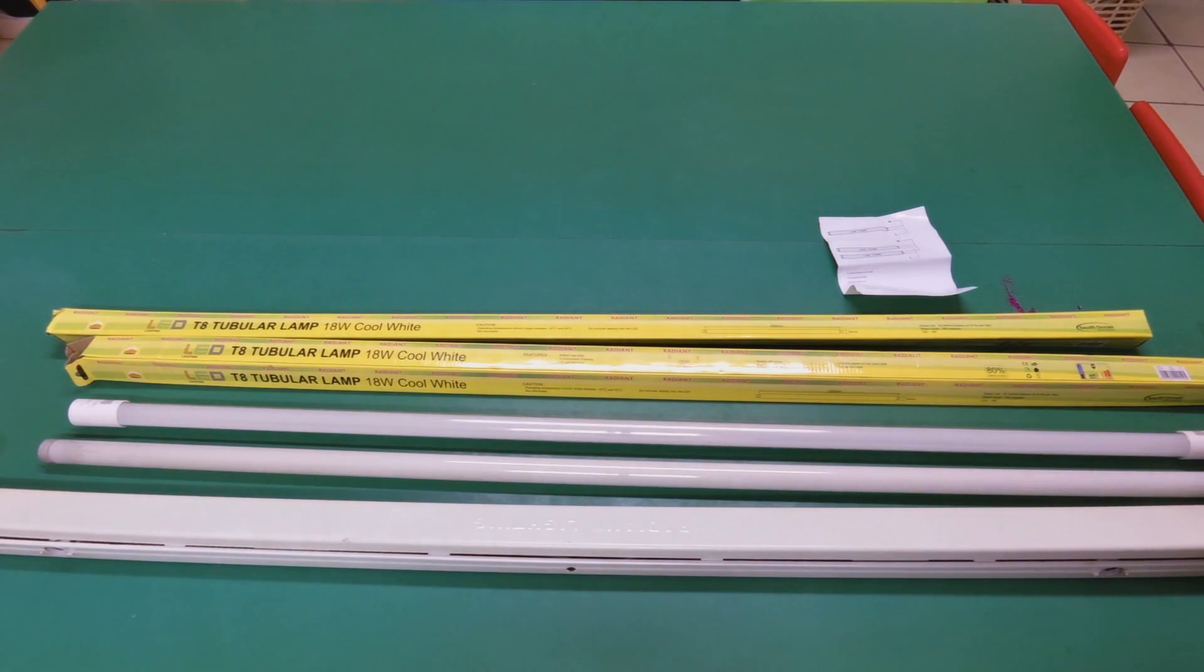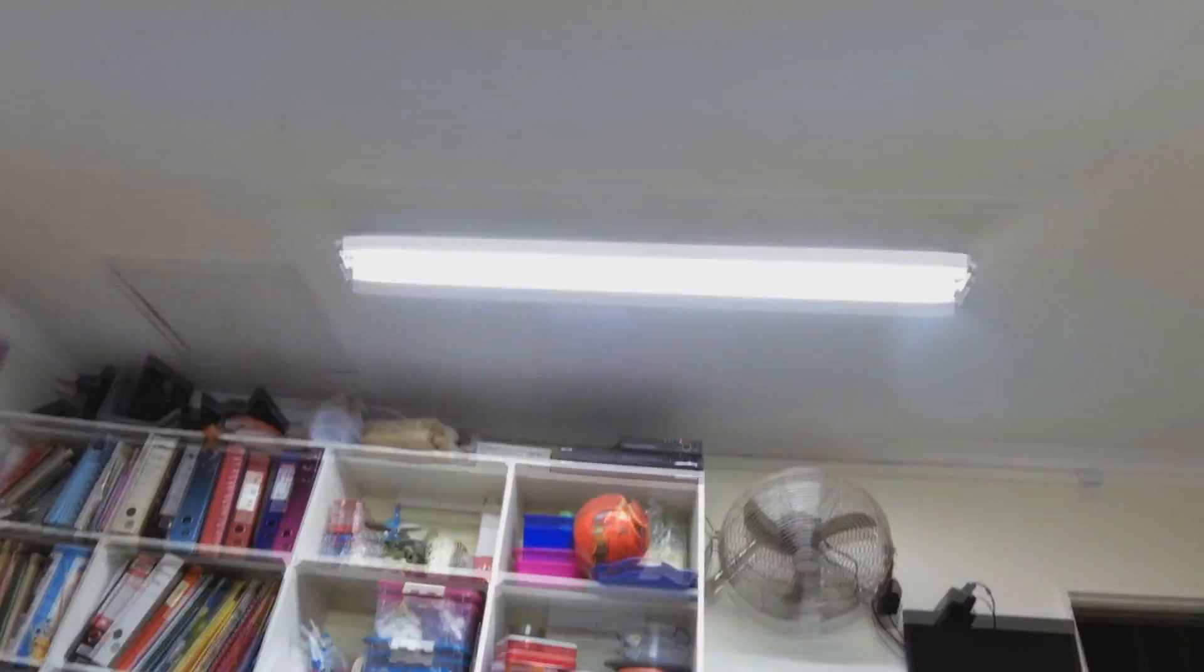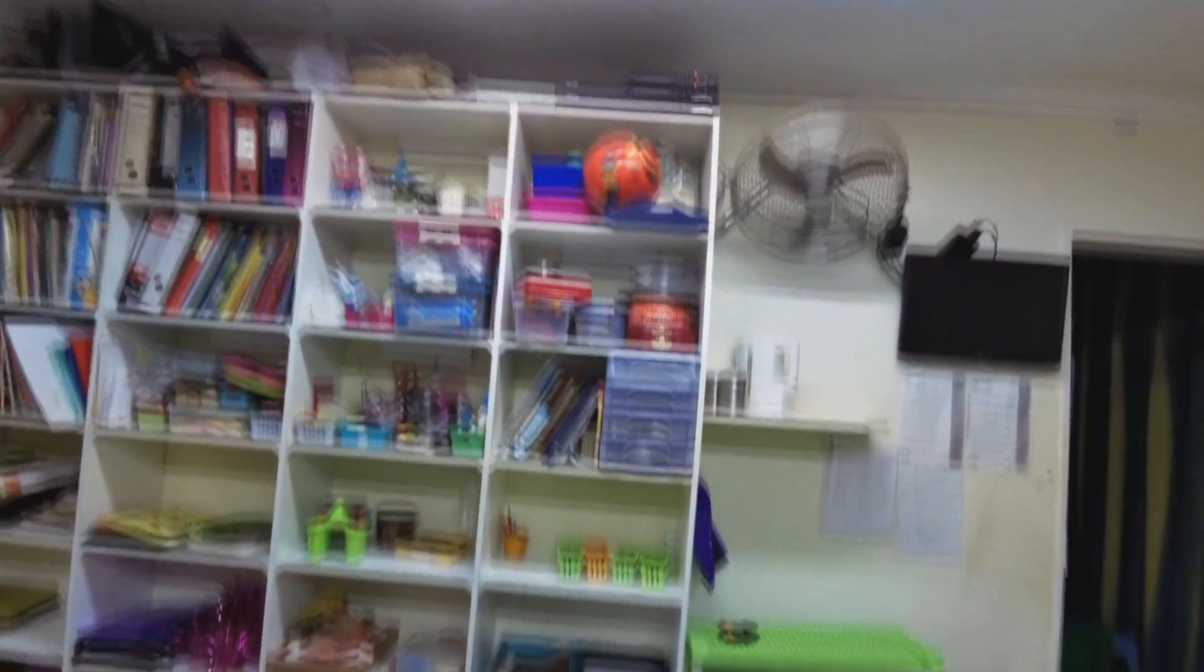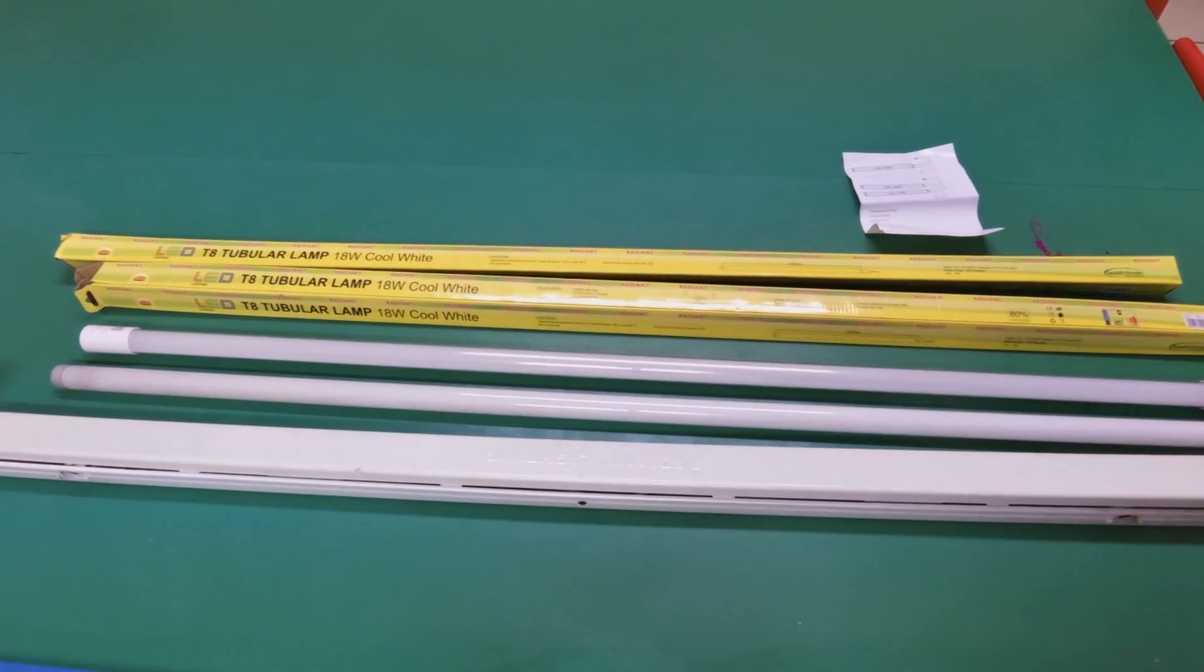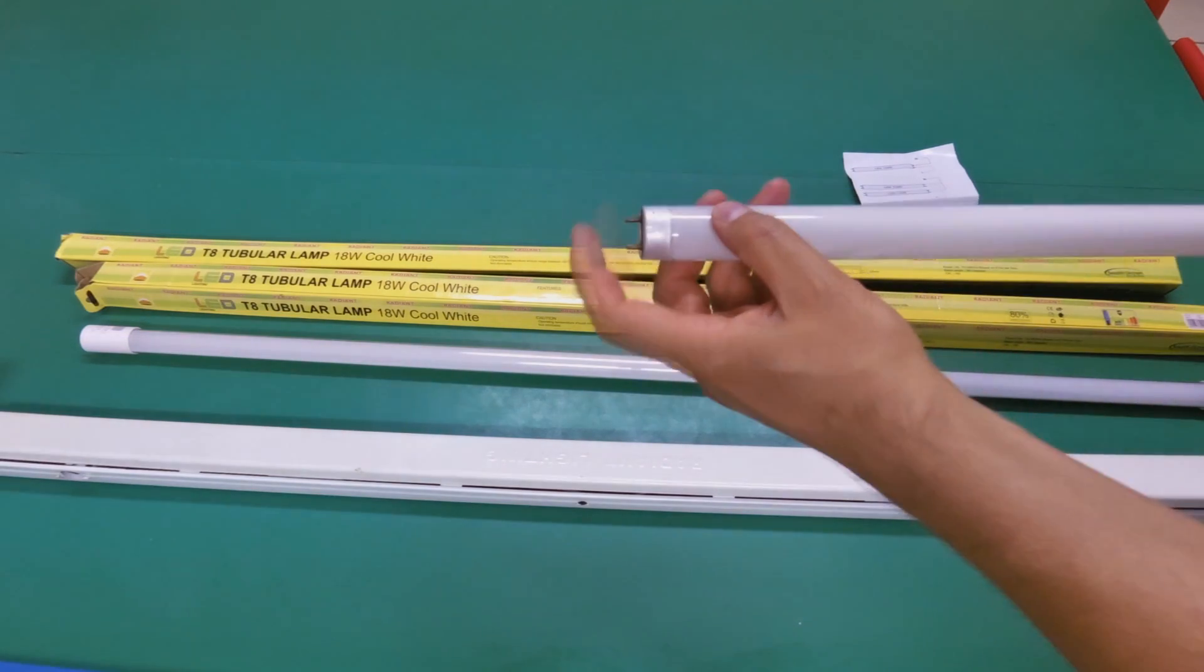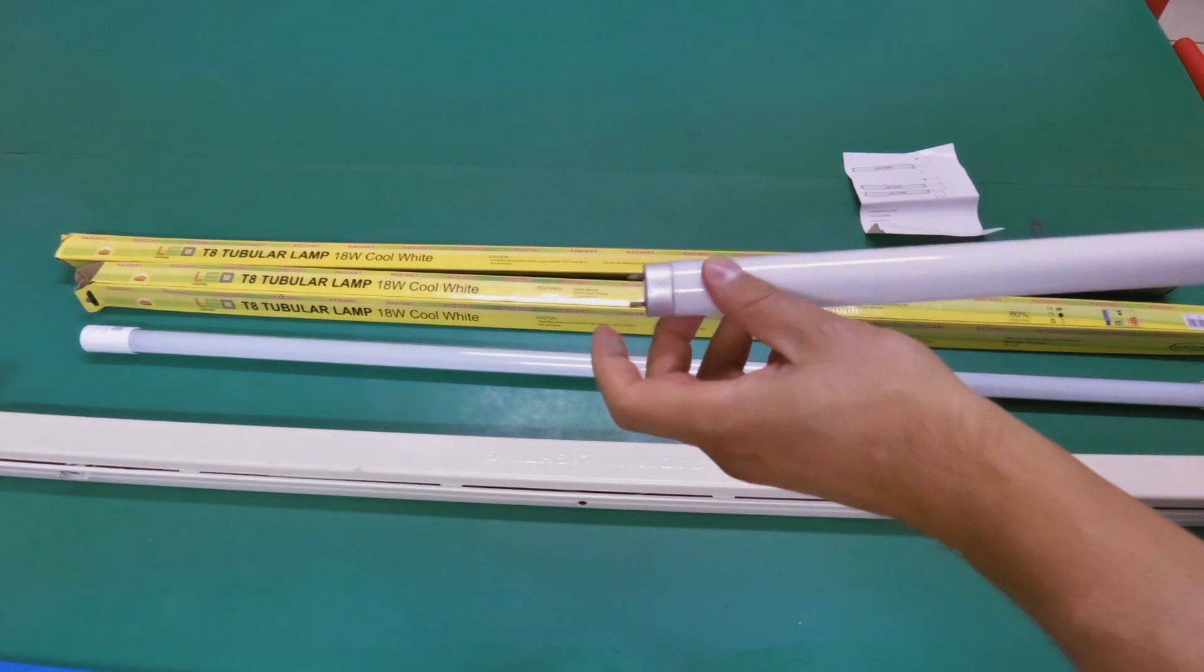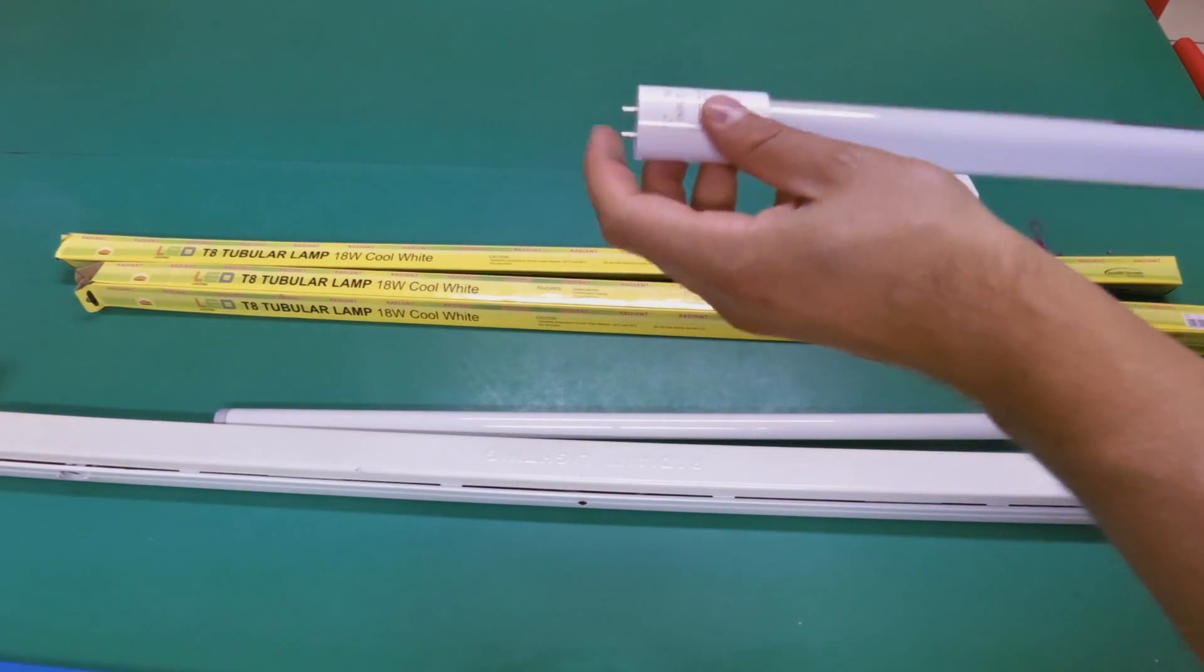Right, let's start with the bulbs, the tubes themselves. This is the fluorescent tube, this is a used fluorescent tube. You can see it has two pins on one side and two pins on the other side.